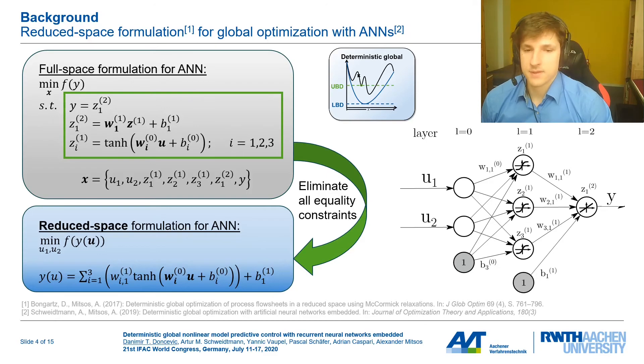In contrast, we are going to use the reduced space formulation shown down here for global optimization. Essentially, we eliminate all of these equality constraints by inserting these equations straight into the objective function. This means that in the optimization problem, only the actual degrees of freedom of the neural networks, so in this case u1 and u2, also become decision variables of the optimization problem. This elimination is quite straightforward because all of these functions are explicit ones. The trade-off here is that by building these larger functions, the relaxations of these functions become looser. So in theory, we need to branch longer until we find the global optimum. But our previous work by Schweidtmann and Mitsos has shown that overall the reduced space formulation for optimization with neural networks is very advantageous.